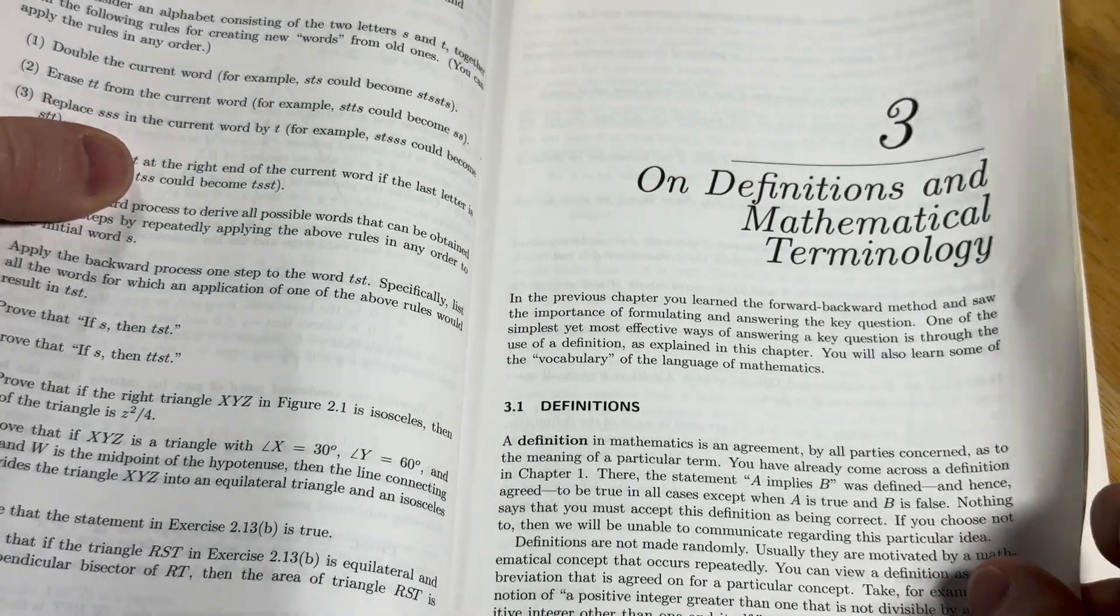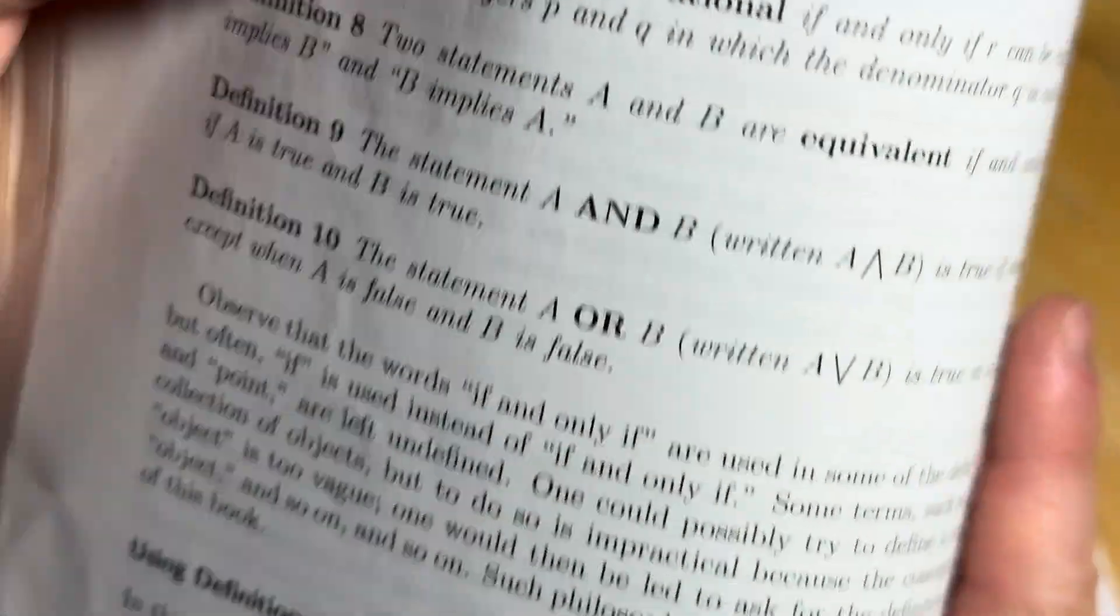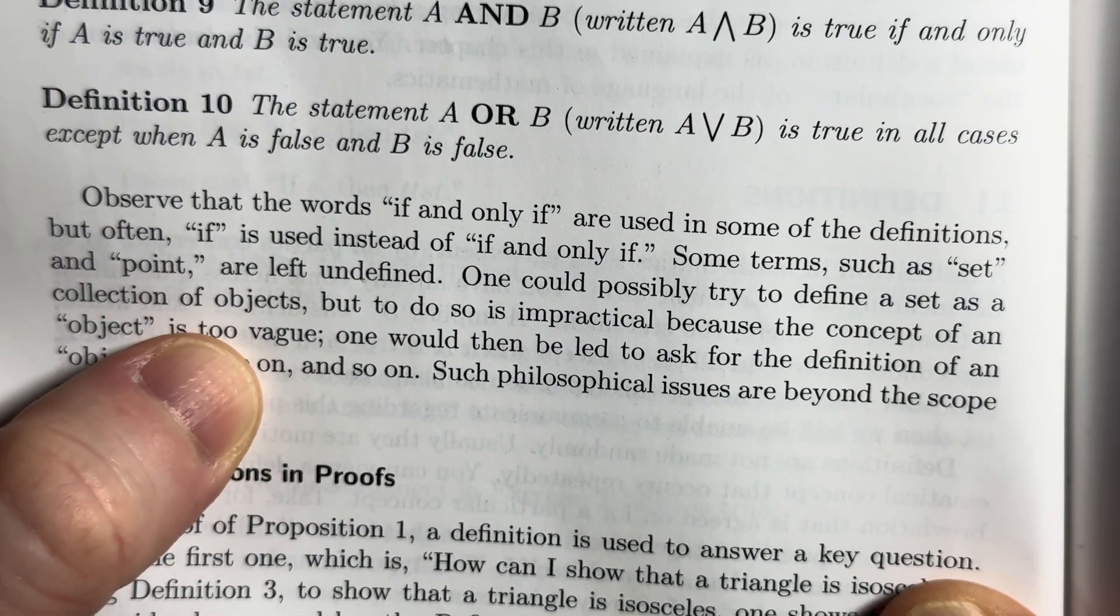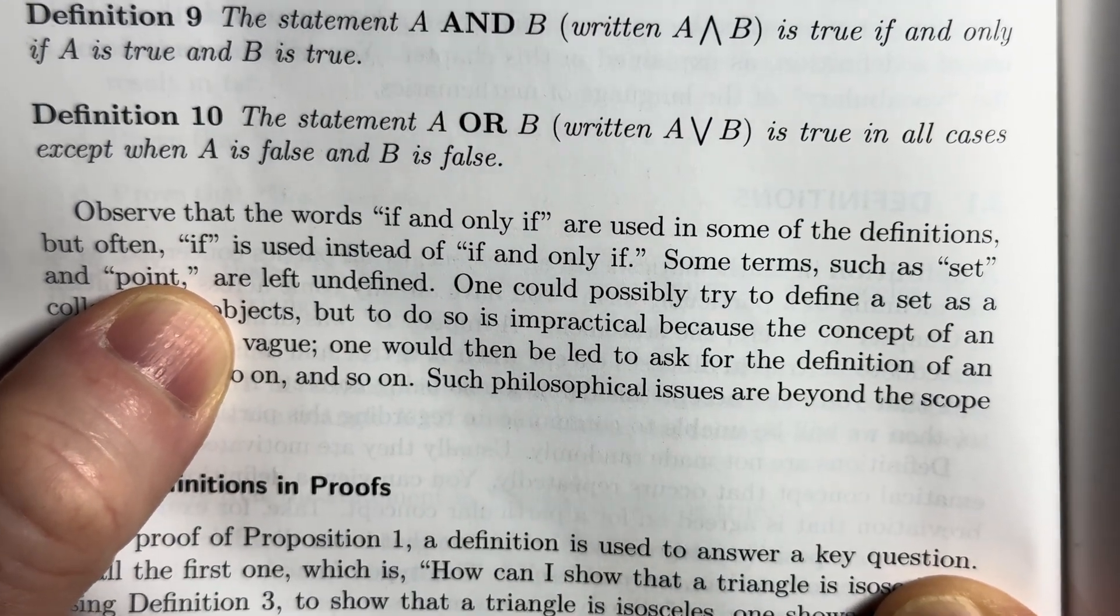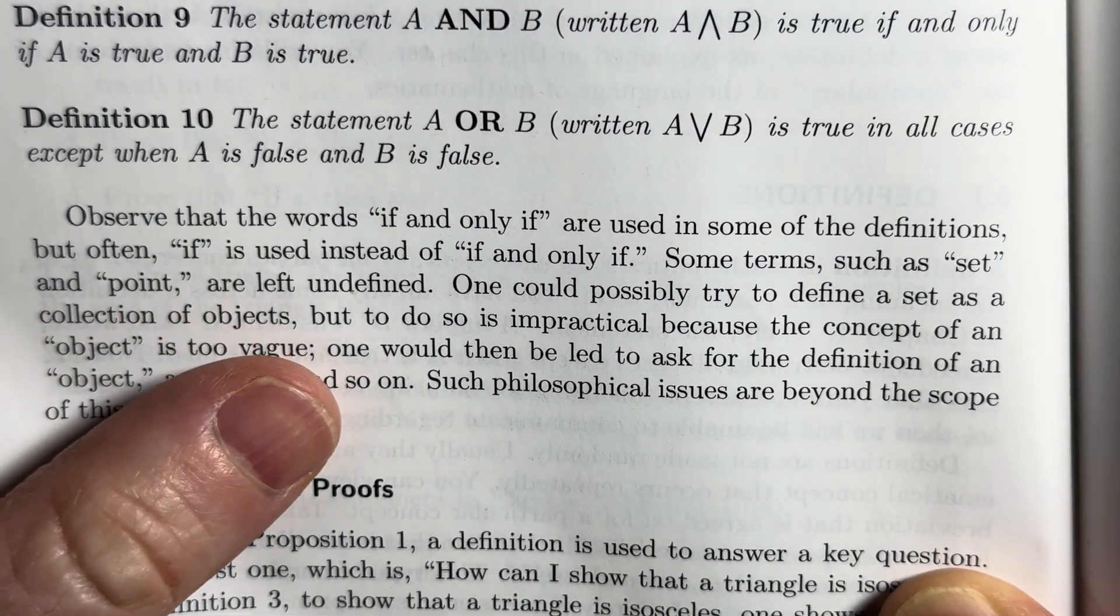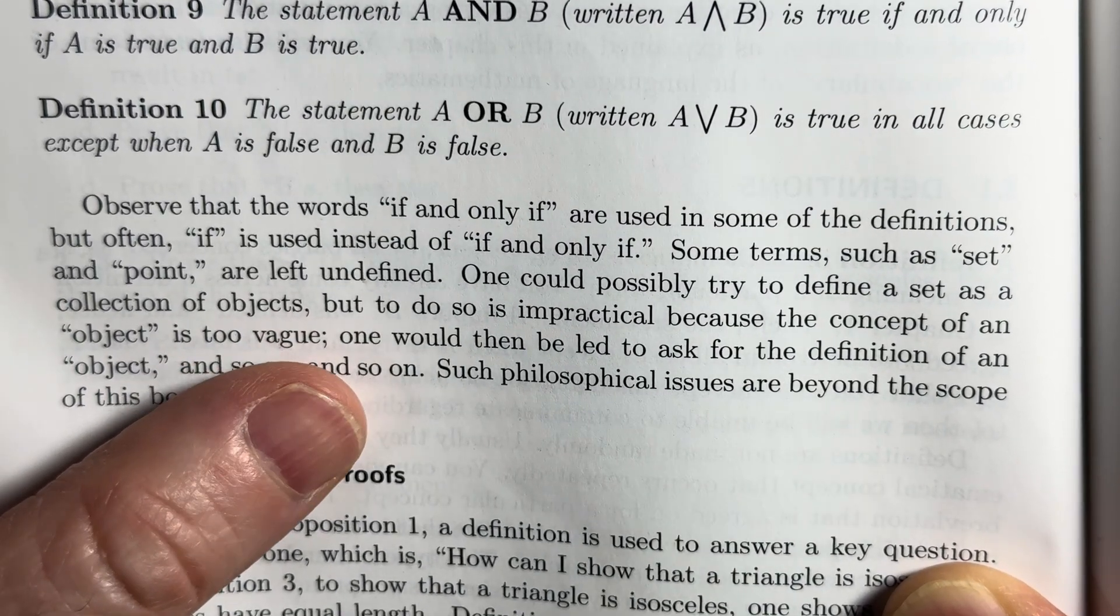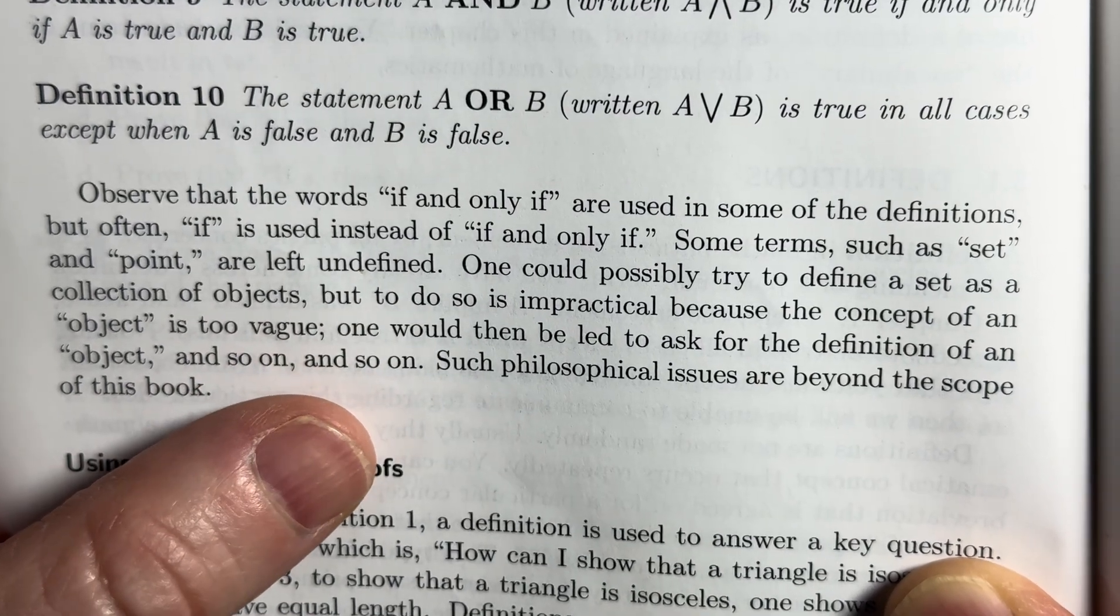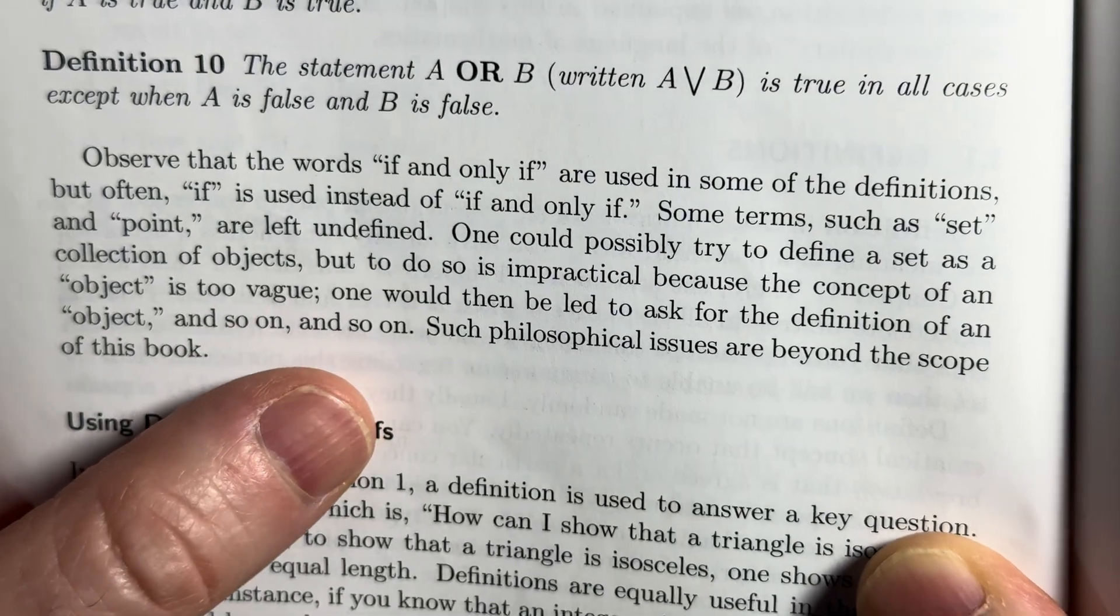You know, every definition is an if and only if statement. That's a, oh, here, I think he talks about that here. Observe that the words if and only if are used in some of the definitions, but often if is used instead of if and only if. Some terms such as set and point are left undefined. One could possibly try to define a set as a collection of objects, but to do so is impractical because the concept of an object is too vague. And one would then be led to ask for the definition of an object, and so on and so on.